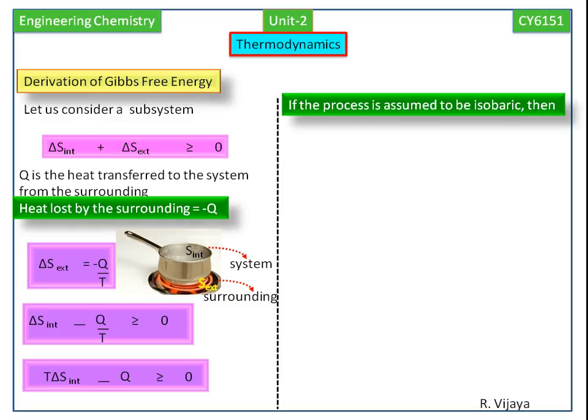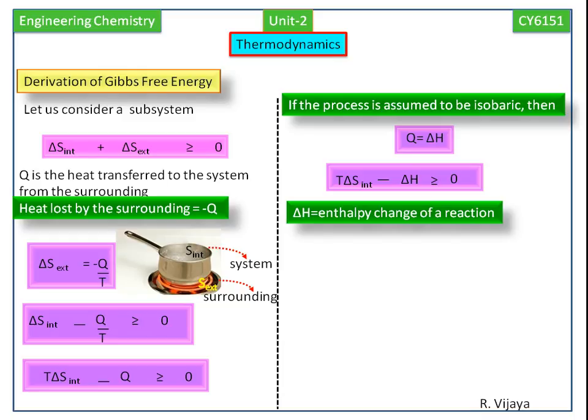If the process is assumed to be isobaric, then Q equals delta H. Substituting Q value in the above equation, we get T delta S internal minus delta H greater than or equal to 0, where delta H is the enthalpy change of a reaction.